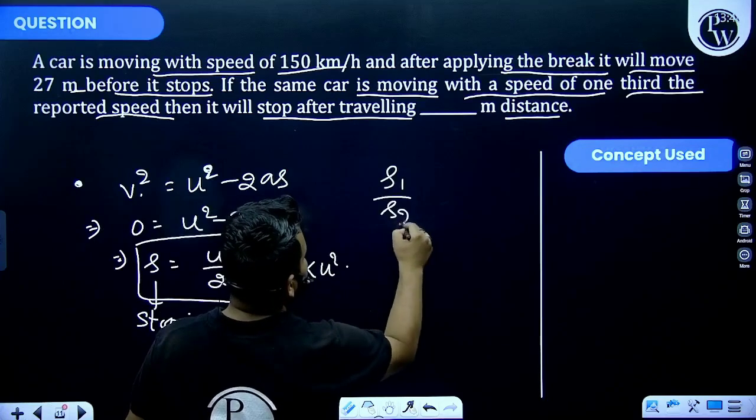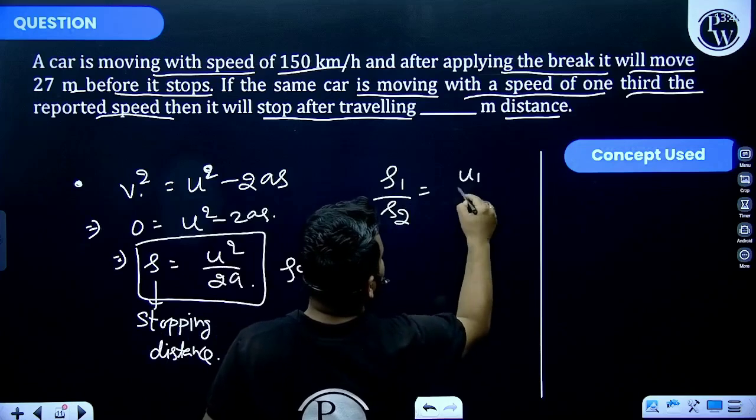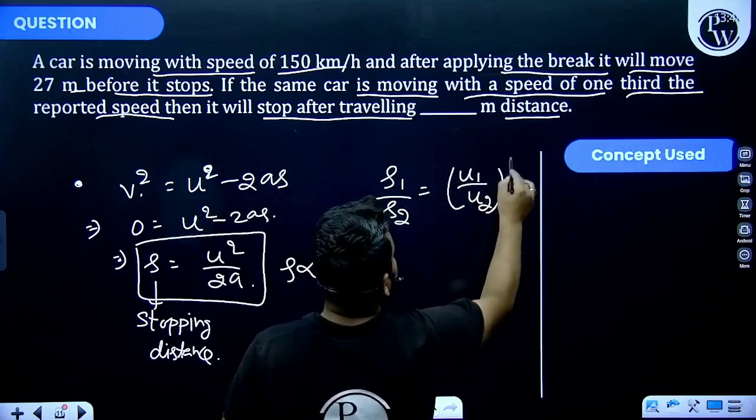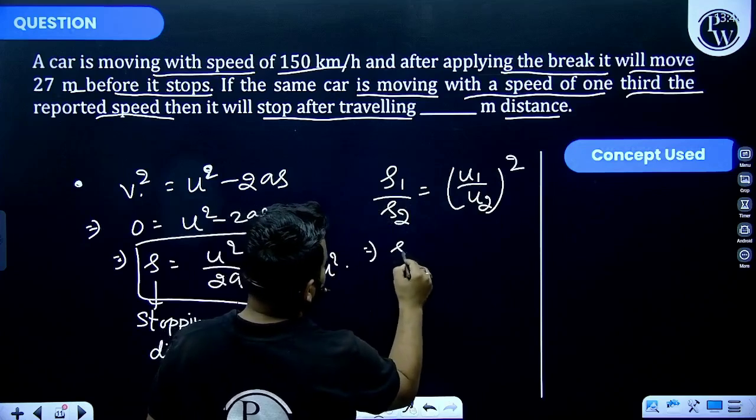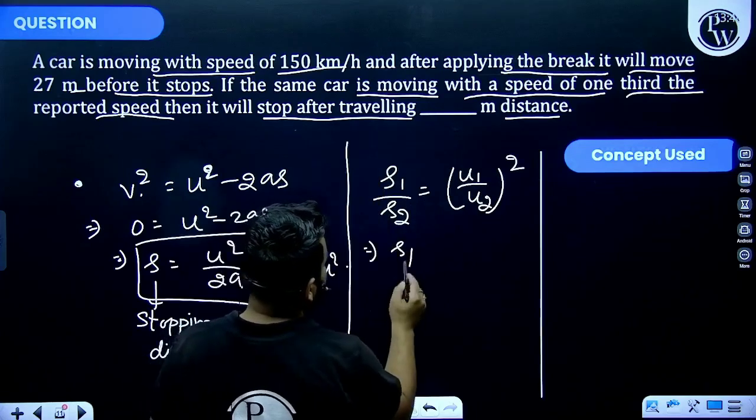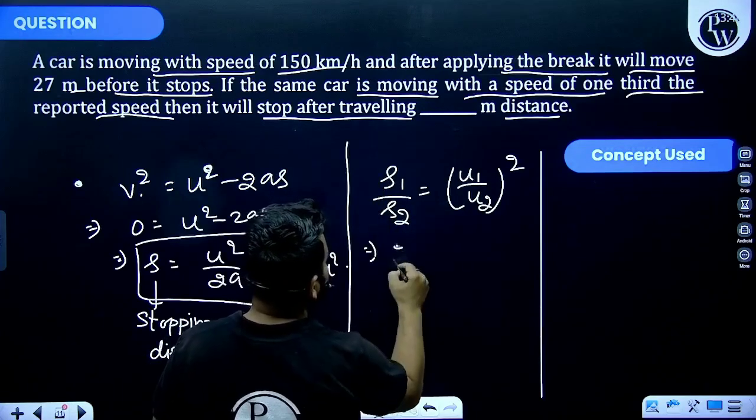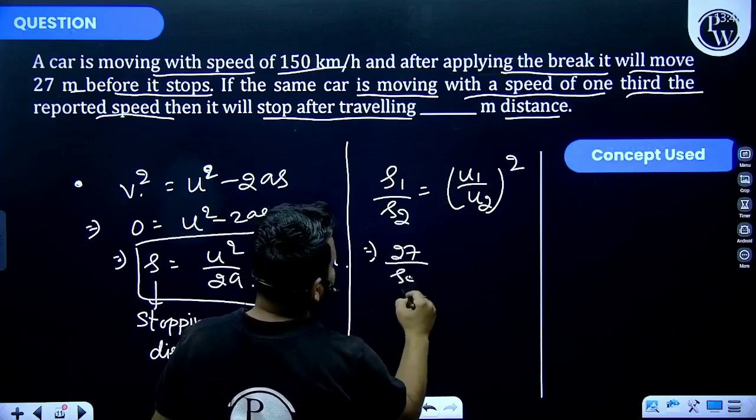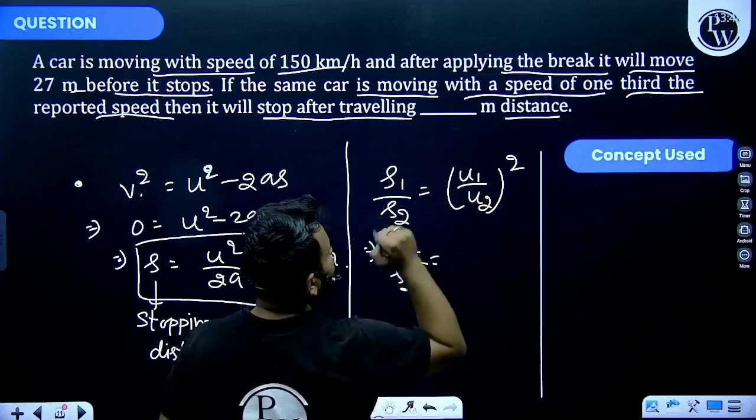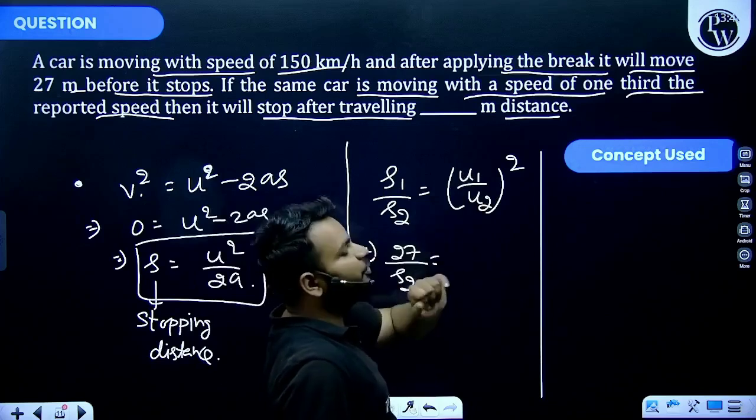But that implies s1 divided by s2... s2 is given as 27, and u1 by u2... u2 is one third of u1, that means u1/u2 is equal to 3.